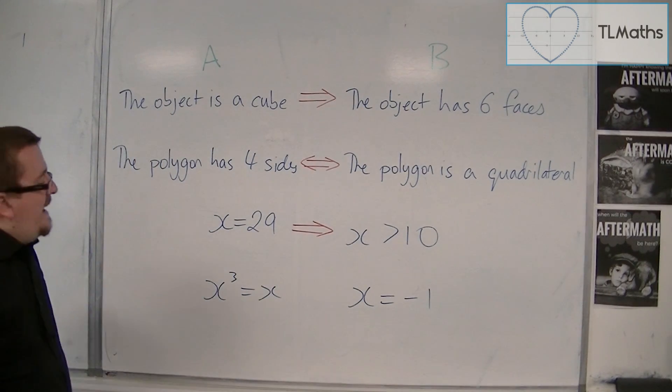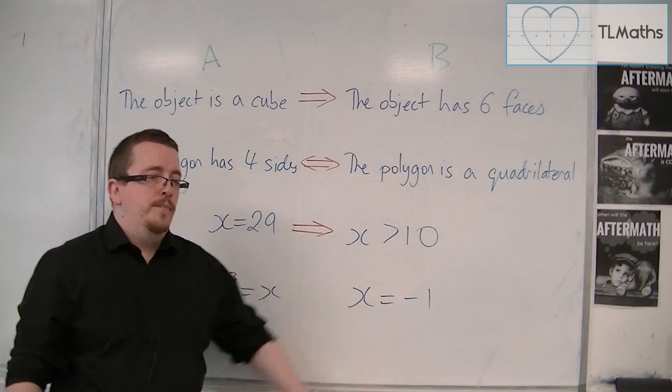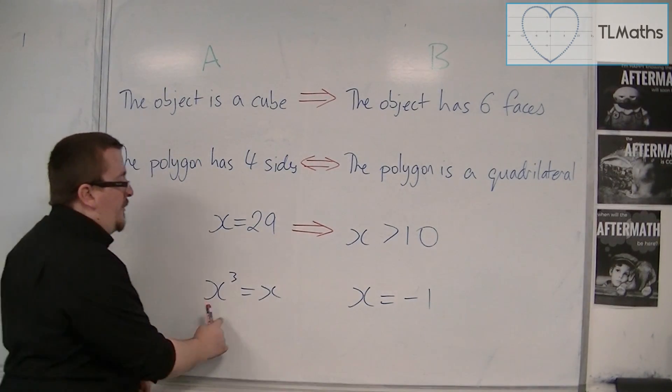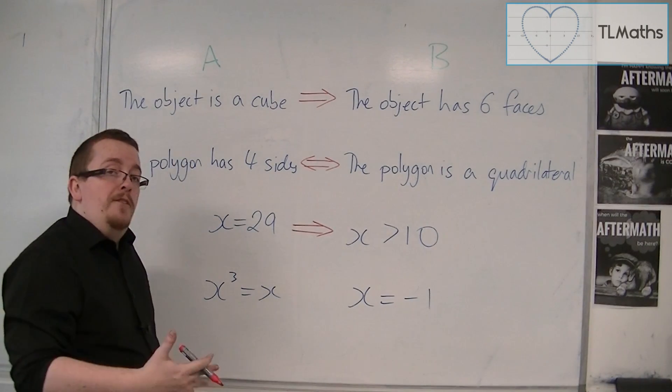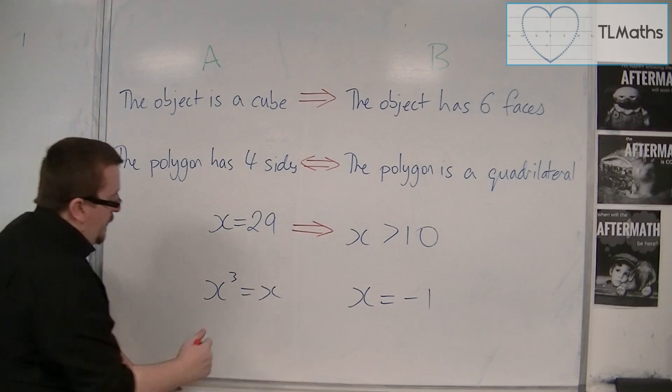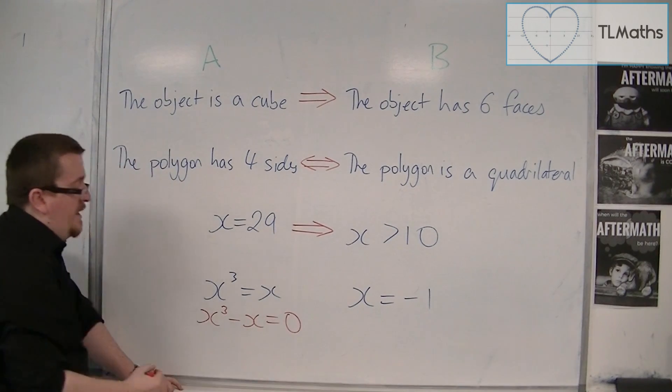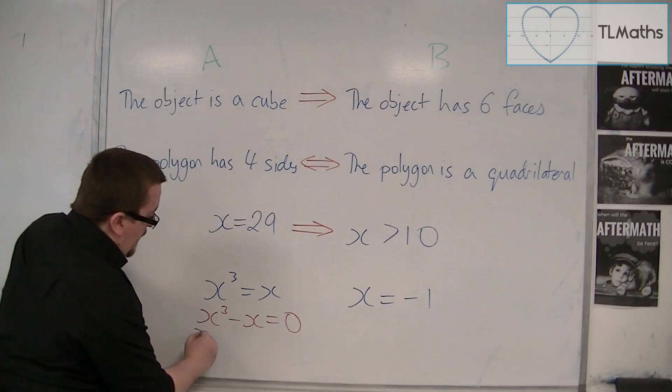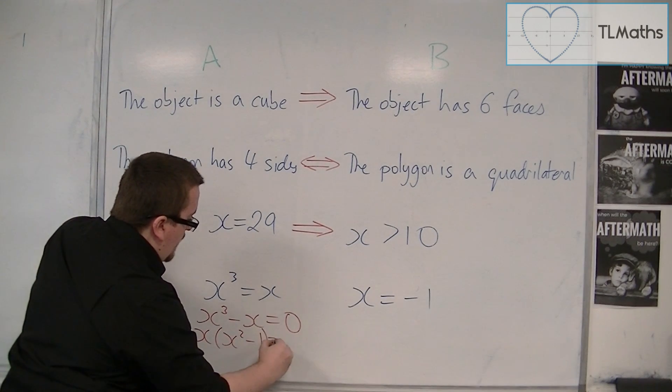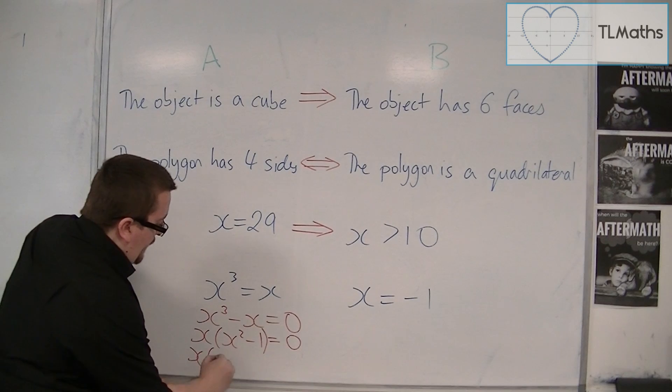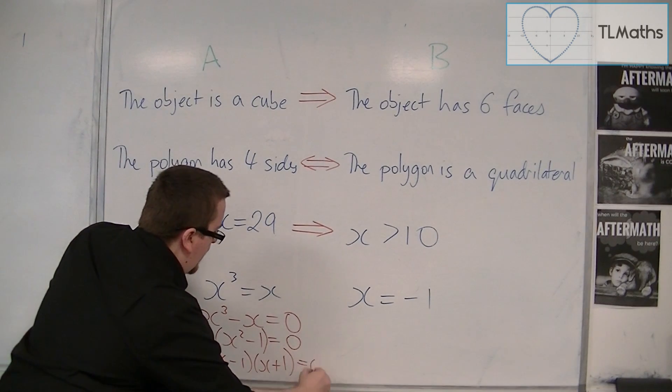Then with the fourth one, x cubed equals x, x equals minus 1. Well, if x cubed is equal to x, then in order to solve that, you would have to factorise it. So you would have to take x from both sides. You'd then have to factorise this. So you'd have x times x squared minus 1 equals 0. And then you would have x times x minus 1, x plus 1, so difference of two squares, equals 0.